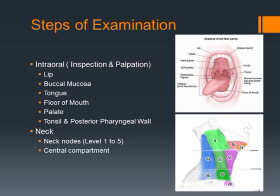Following a certain algorithm will ensure that none of the subsites are left without examination. Systematic examination of the lip, buccal mucosa, tongue, floor of mouth, palate, tonsil and posterior pharyngeal wall is required for intraoral examination in the form of inspection and palpation. The neck should also be examined for nodal status at various levels.